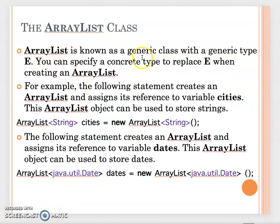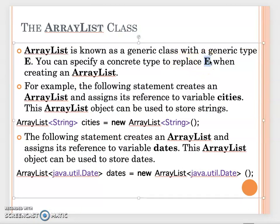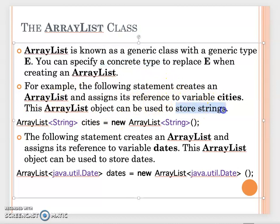In the UML you saw the letter E inside angle brackets — this is a generic type, meaning E can be replaced with any concrete class type. For example, if I want to create an ArrayList of Strings, I'll call it cities, which will hold different city names.